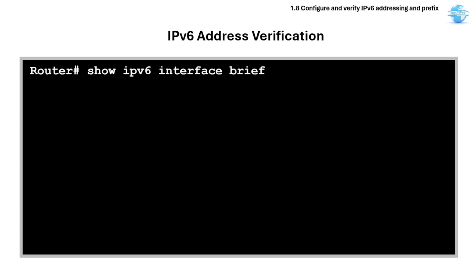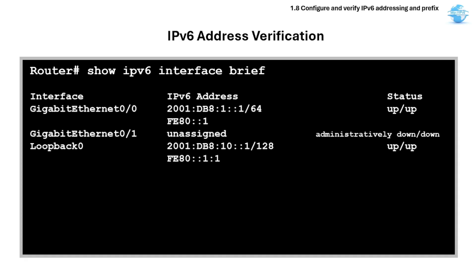The 'show ipv6 interface brief' command shows configured addresses. It lists all interfaces and their IPv6 addresses and shows the status of each interface. The first up/down refers to Layer 1 (physical layer), and the second up/down refers to Layer 2 (data link layer). This is useful for quick interface and IP address checks.